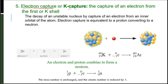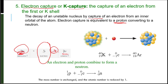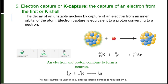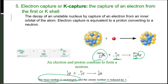We then have electron capture or K capture — the capture of an electron from the first or K shell. This is the first time that we can see one of these particles as a reactant: the decay of an unstable nucleus by capture of an electron from an inner orbital of an atom, which is equivalent to a proton converting to a neutron. For example, beryllium-7 with atomic number 4 decays to lithium-7, where 4 minus 1 is 3 and the mass of 7 stays at 7. For potassium, 19 minus 1 is 18, corresponding to argon, and its mass of 40 stays the same — so the mass number is unchanged and the atomic number is reduced by 1.